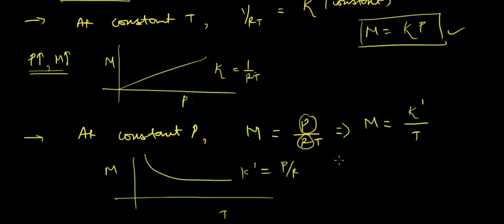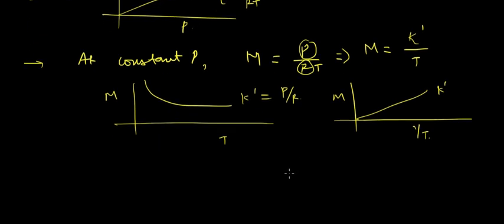And if you draw the graph of M versus one by T, then it would be a straight line with K' as constant.